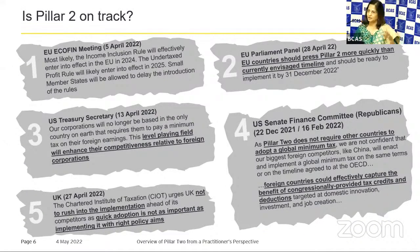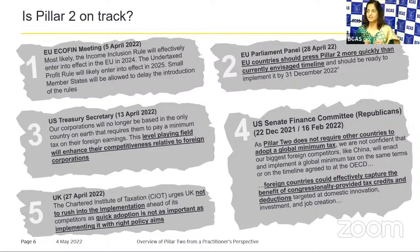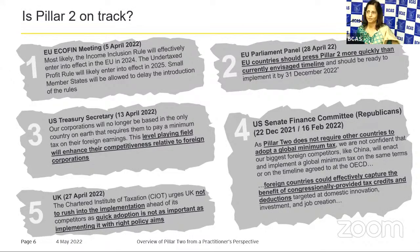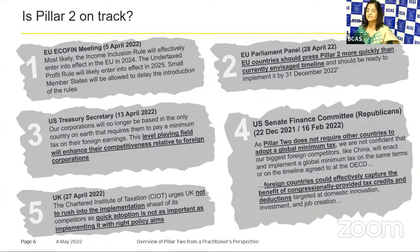Whether Pillar 2 is on track — India is in wait-and-watch mode. There was a sense that the EU would go ahead and implement it from 1st January 2023. The EU even came up with a draft directive. But there is a tussle: one quarter insists on the 2022 timeline, while another group asks for a deferral of at least one year. So there is ongoing discussion about deferral by a year.